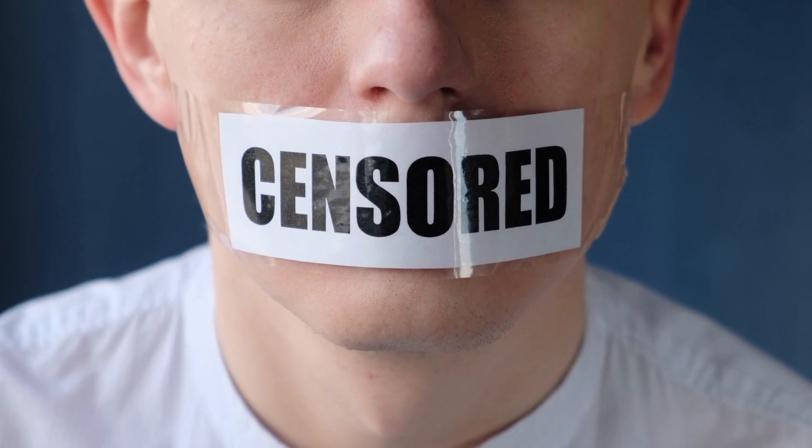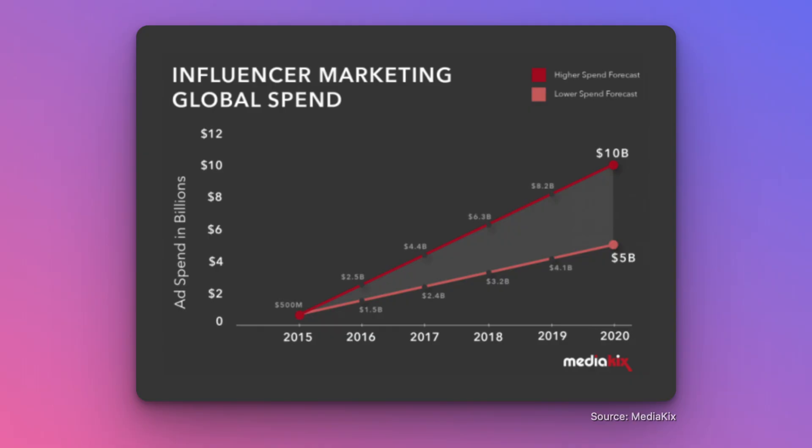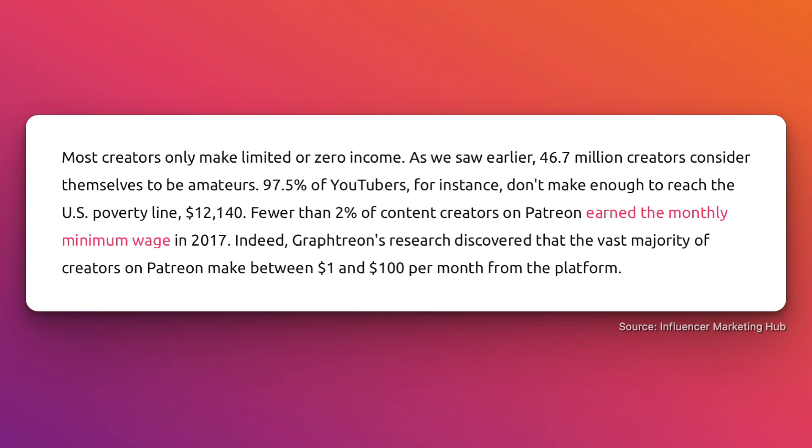These Web2 platforms offer vague terms and conditions and in some instances use censorship as a weapon. The final issue with Web2 content platforms is monetization. The monetization model in Web2 is almost solely focused on advertising. Creators rely heavily on ad share revenue and brand sponsorships to make a living. Newer platforms focused on memberships such as Patreon have their own issues as well — fewer than 2% of content creators on Patreon earned the minimum wage in 2017, with the majority earning between $1 and $100 per month.